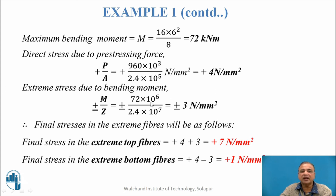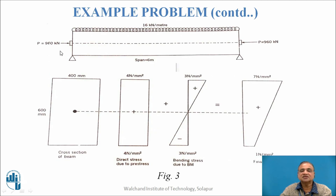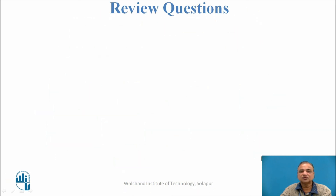Extreme fiber stress due to bending FB = ±M/Z = ±3 N/mm². Final stress at top fiber = FA + FB = 4 + 3 = 7 N/mm² (compressive). Final stress at bottom fiber = FA − FB = 4 − 3 = +1 N/mm² (compressive). The stress diagram shows: axial stress P/A uniform across the section, bending stress +M/Z at top and −M/Z at bottom, and the final combined stress. The top stress of 7 N/mm² must be less than σcbc, and the bottom stress of 1 N/mm² is greater than zero — confirming no tension.